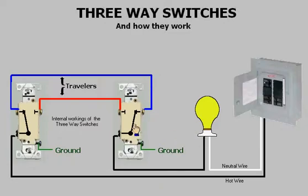Here I'll demonstrate the two three-ways in the other position. Power is fed through, travels through the first three-way across the other traveler to the second switch, and then through that three-way and on to energize the light.